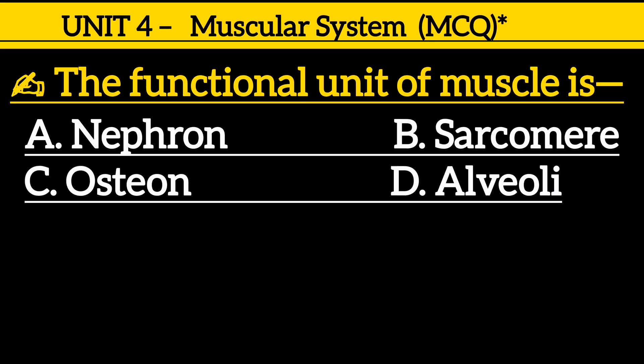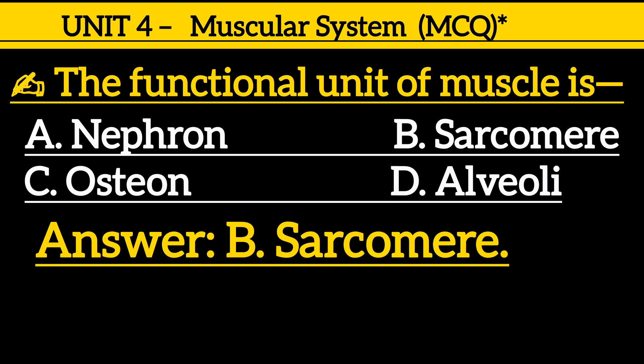First one is: the functional unit of muscle is — option A: nephron, option B: sarcomere, option C: osteone, option D: alveoli. Correct answer is option B, sarcomere.